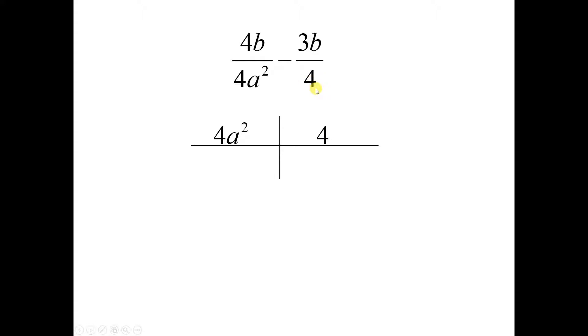4a squared goes into itself, and all I need to do is multiply this by a squared. But let's go ahead and take a look at our methods and see that it still works. 4a squared is 2 times 2 times a times a, and 4 is 2 times 2. The thing they have in common, the greatest common factor, is 4. And what's left over? a squared. Multiply that all together, 4a squared.